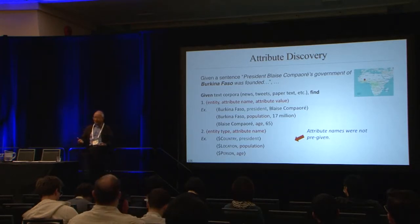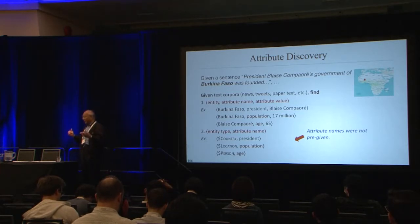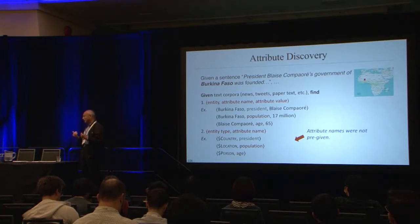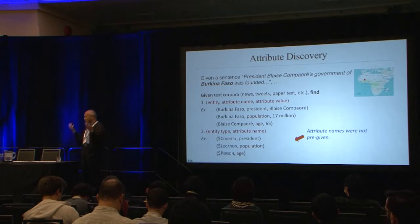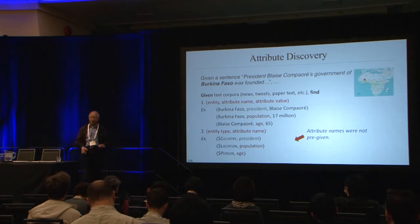The problem is we don't really have enough training data, and we want everything to be automated and correct — with good precision and recall. Can we do this automatically? And as Xiang just mentioned, we have tools to generate types, so if we can get a type like 'country', it may have an attribute called 'president'.